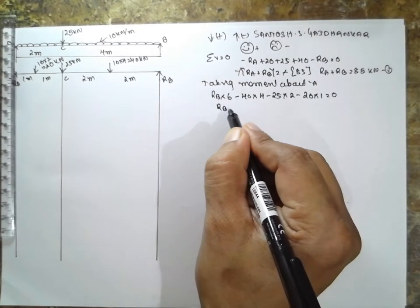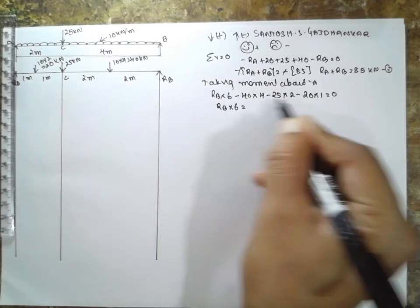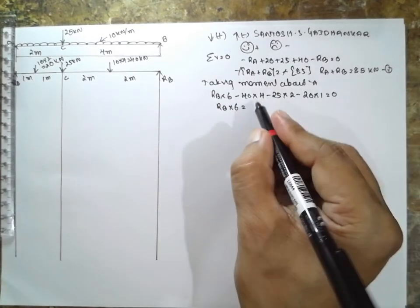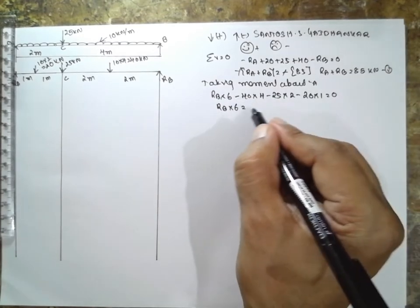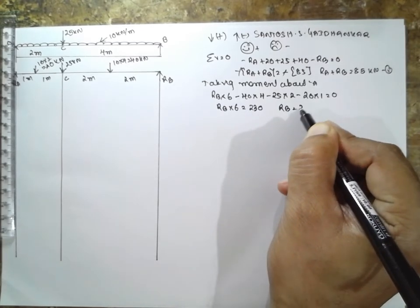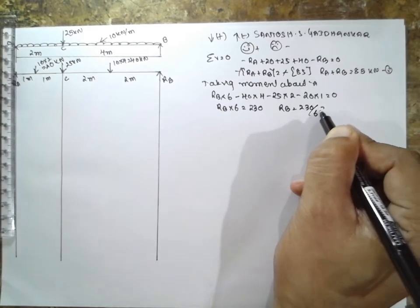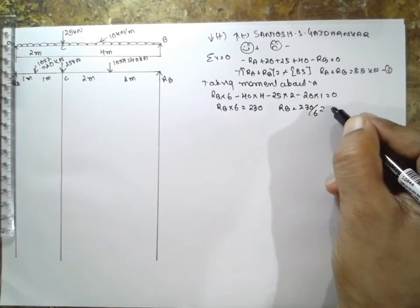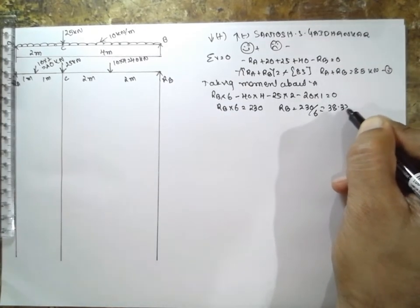If you calculate RB into 6, this term has brought this side, then it becomes positive and answer will be 230. Therefore RB is equal to 230 divided by 6, the answer is 38.33 kilonewton.